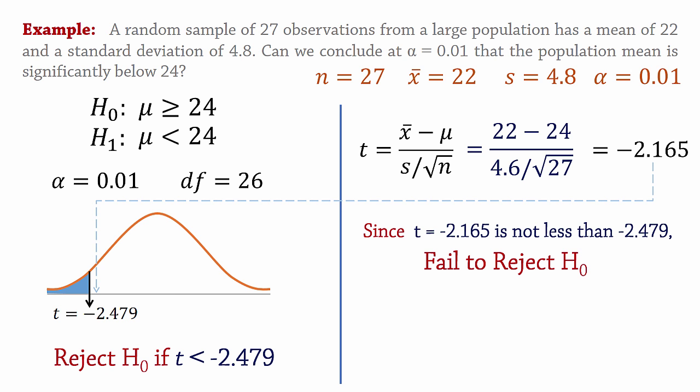And because we cannot reject the null hypothesis, we cannot support the alternative that says that the mean is less than 24. So at alpha equals 0.01, we can say there is not enough evidence to conclude that the population mean is significantly less than 24.